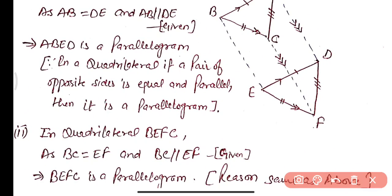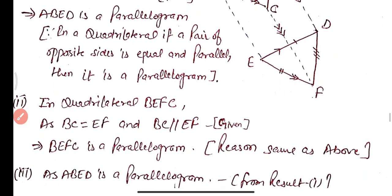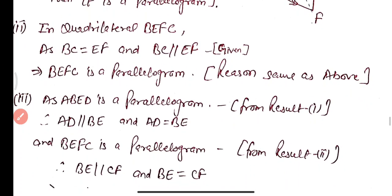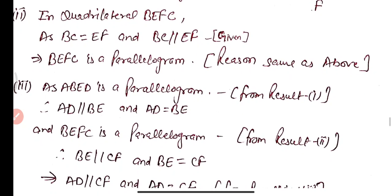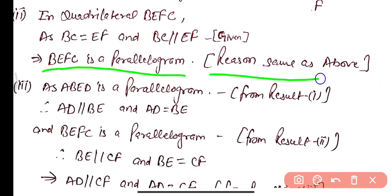Part 2: In quadrilateral BEFC, we are given BC equals EF and BC is parallel to EF. Since one pair of opposite sides is equal and parallel, BEFC is also a parallelogram.